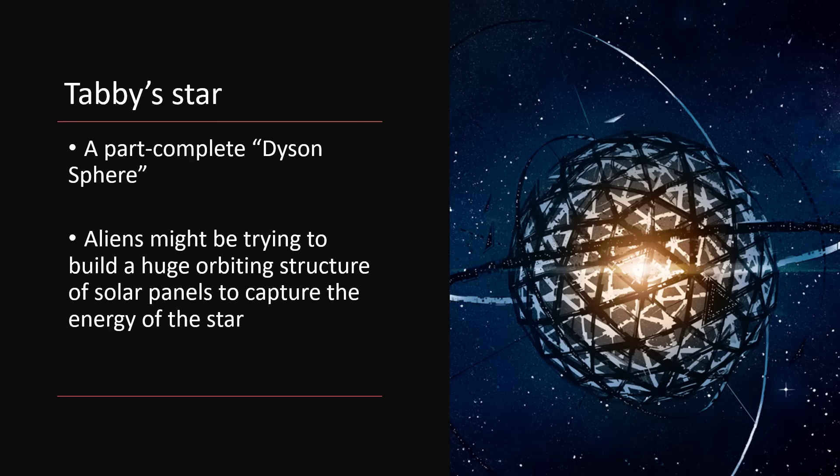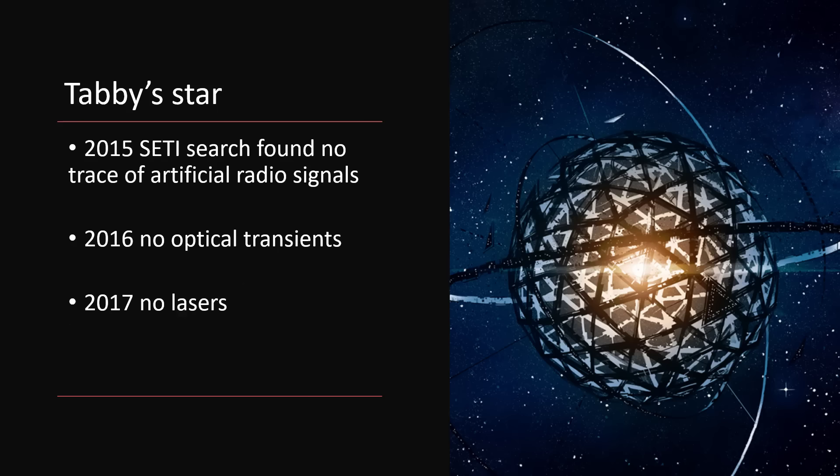Well maybe there are aliens there, so the SETI people turned their artificial radio source detectors to it in 2015. They found nothing. In 2016 people had a look for optical transients in case there were strong beamed light sources from the aliens, and they didn't find any. A year later they tried with lasers trying to detect any laser emissions that might come our way and didn't find any. But I just have to say that absence of evidence is not evidence of absence, so the fact that we can't find these things doesn't necessarily mean that they're not there.